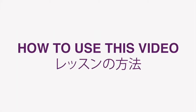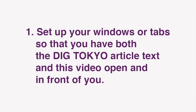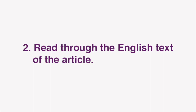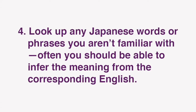Now I'd like to go over how we envision these lessons being used. First, set up your windows or tabs so that you have both the Dig Tokyo article text and this video open and in front of you. Then, start by reading through the English text of the article. Next, read through the Japanese text of the article. Look up any Japanese words or phrases you aren't familiar with.